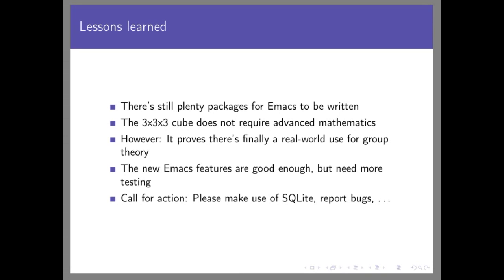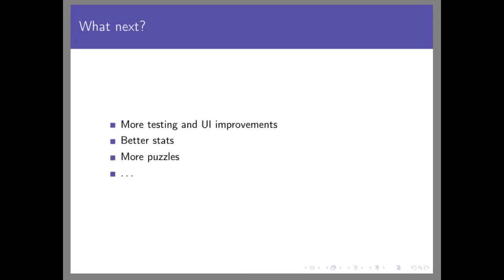What's next for this package? There are lots of obvious UI improvements and testing to be done. I basically want to reach feature parity with the Twisty Timer app, which this is very much inspired by. I want nice-looking graphical stats instead of just a simple list of times, and support for more puzzles as I learn them — having Emacs support me through that process. Generally it's a very open-ended package. That concludes the talk — thank you very much.